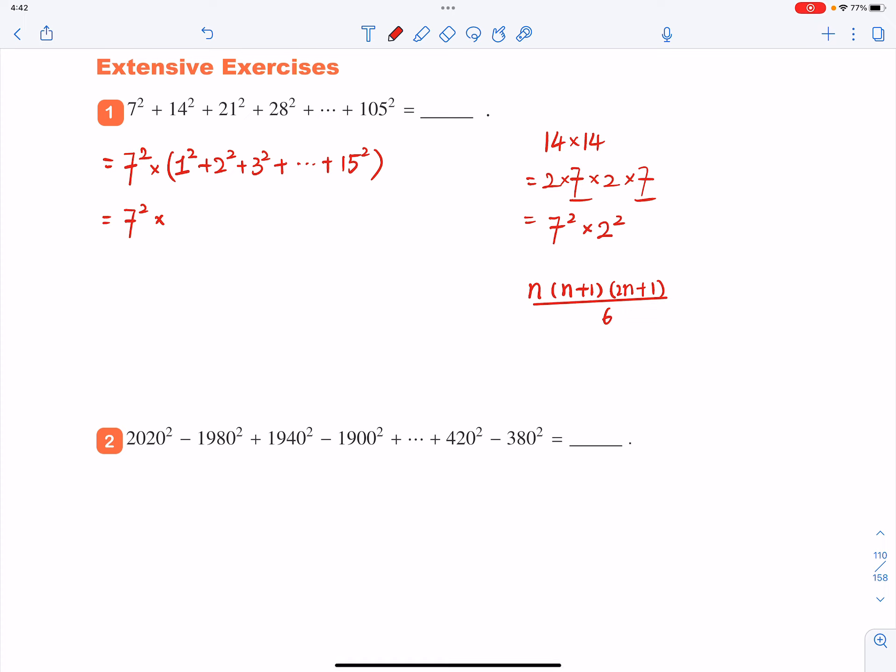Now we'll see that n equals the last term, which is 15. So we're going to do 15 times 15 plus 1, that'll be 16, and then times by 2 times 15 and adding 1, so that'll be 31. And then divide that by 6.